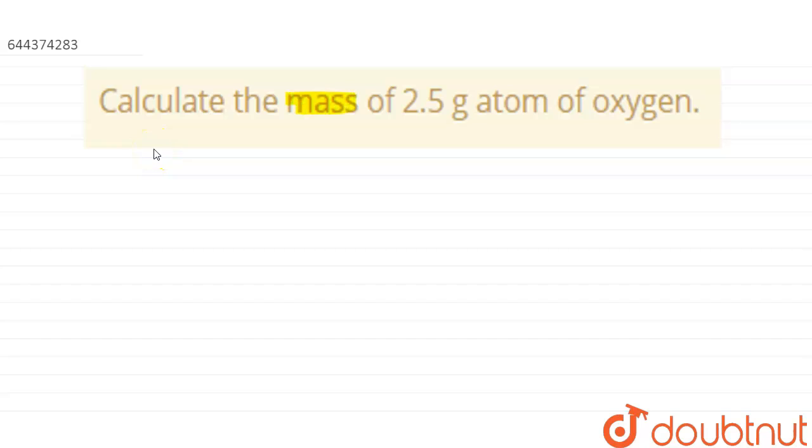the mass of 2.5 gram atom of oxygen. So whenever gram atom is written together, that means they are talking about moles. So here it is given that 2.5 gram atoms of oxygen equals 2.5 moles of oxygen.